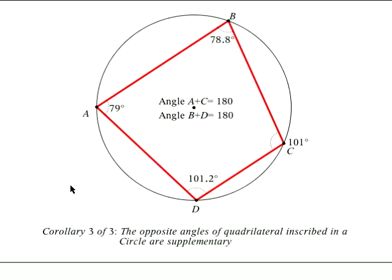Corollary number three. The opposite angles of a quadrilateral inscribed in a circle are supplementary. That means that they always add up to 180 degrees.